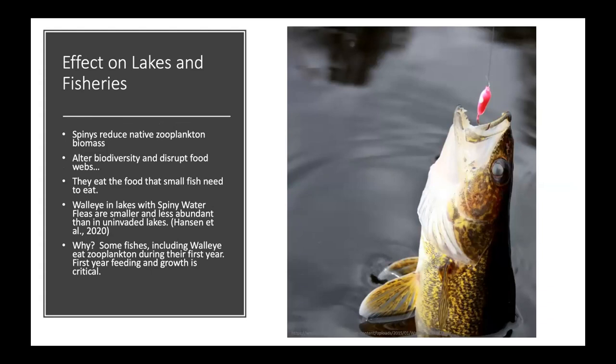Spiny water fleas reduce native zooplankton biomass when they get into a lake, altering biodiversity and disrupting the food web in two main ways. First, they eat the same food that small fish like first-year walleyes need, competing with fish for the same food resources. Research by Hansen et al., published last year and looking at nine lakes across Minnesota, found that walleye in lakes with spiny water fleas are smaller and less abundant compared to walleye in lakes without them.